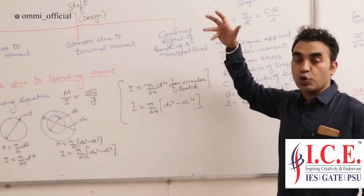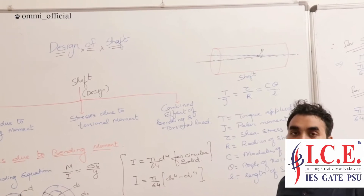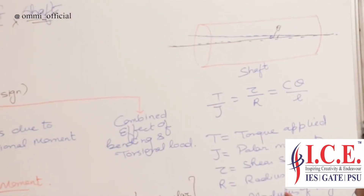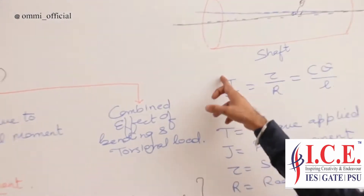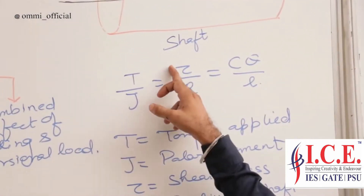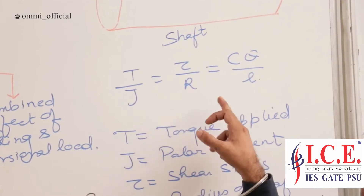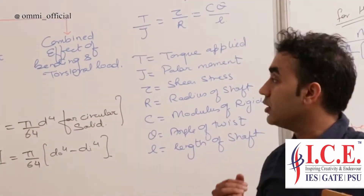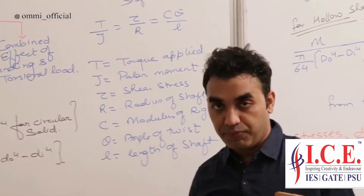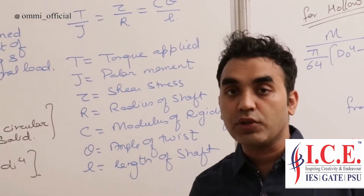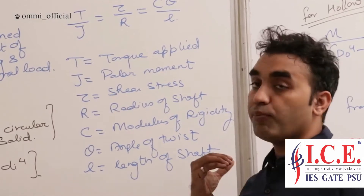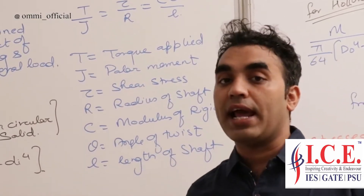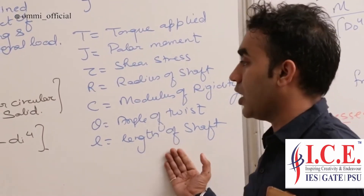This is a shaft — when it rotates about its axis, it has a theta, that is your angle of twist. We have the torsion equation here: T by J equal to tau by R equal to C theta by L. T is your torque applied, J is your polar moment, tau is your shear stress, R is the radius of the shaft, C is your modulus of rigidity, theta is your angle of twist, and L is your length of the shaft.